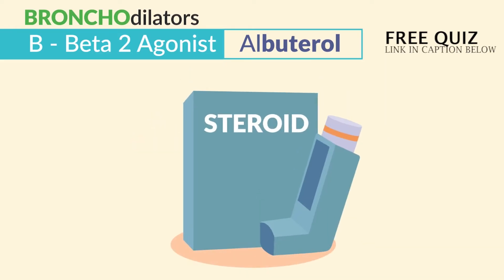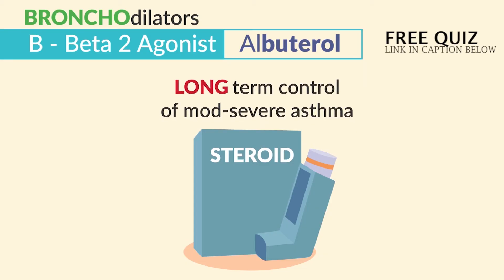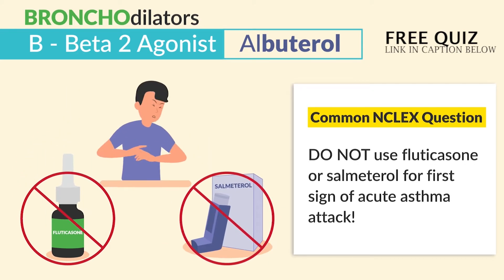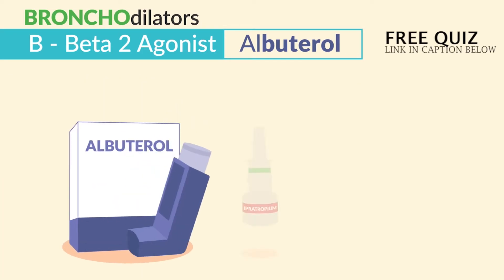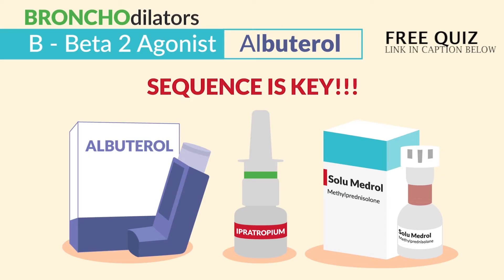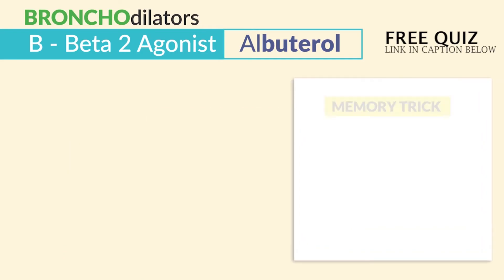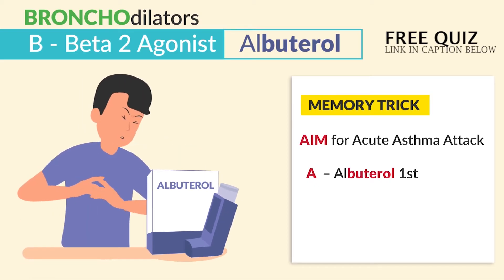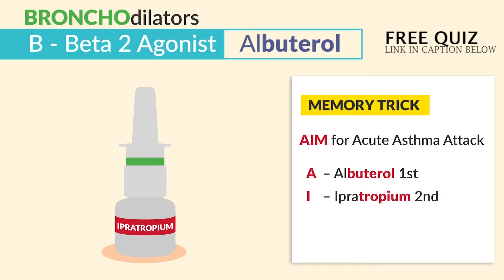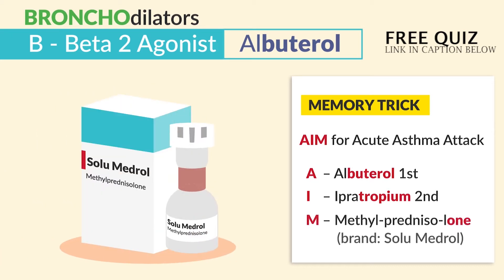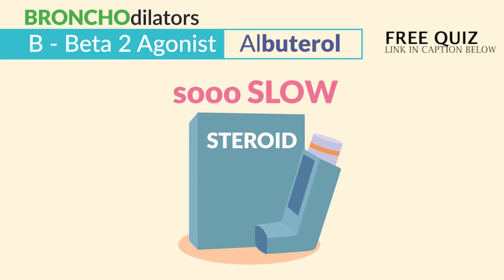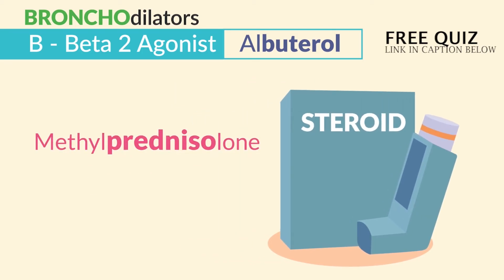Salmeterol is commonly used in combination with steroids for longer-term control of moderate to severe asthma. A common NCLEX question: do not use fluticasone or salmeterol for the first signs of an acute asthma attack. During acute asthma attacks, we give three drugs — and sequence is key on the NCLEX. Use the memory trick AIM: A for albuterol, always used first during brutal asthma; I for ipratropium, always used second; and M for methylprednisolone — brand name Solu-Medrol — which is our steroid, always used last since steroids act so slowly. It has the word prednisolone, which sounds like prednisone, so that's how you know it's a steroid.